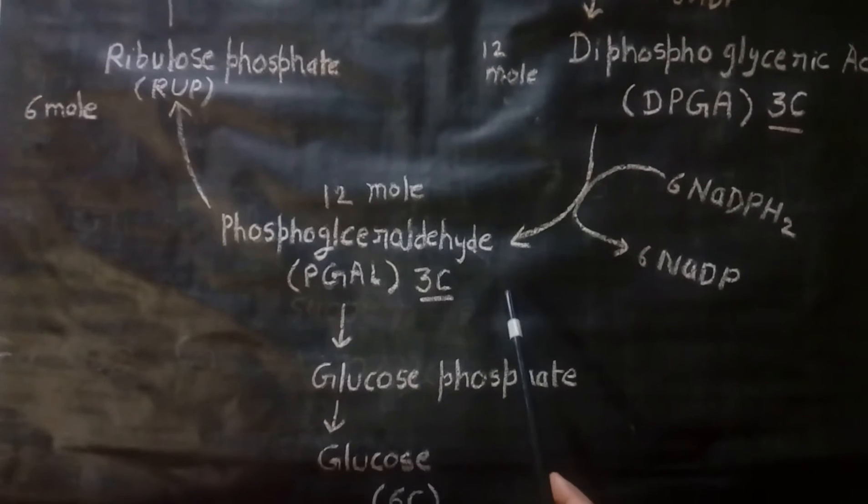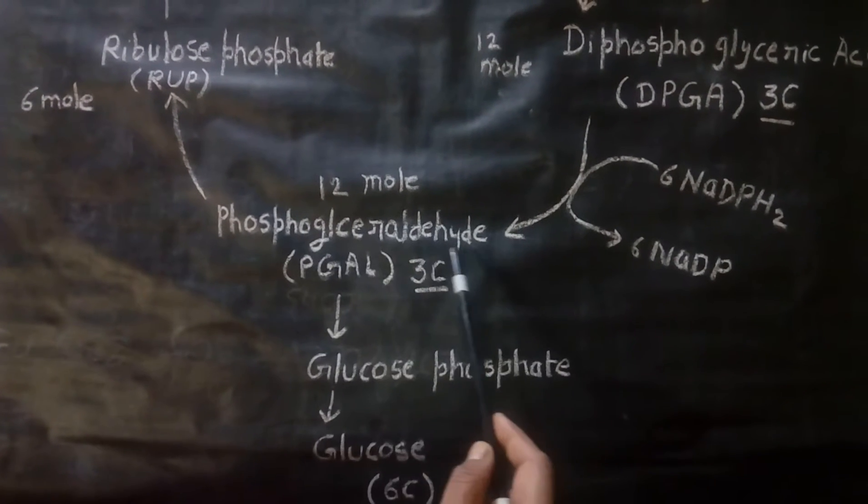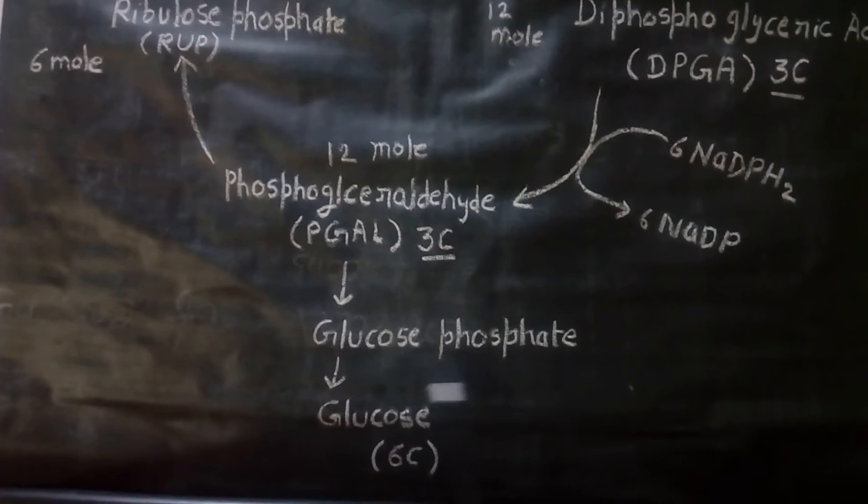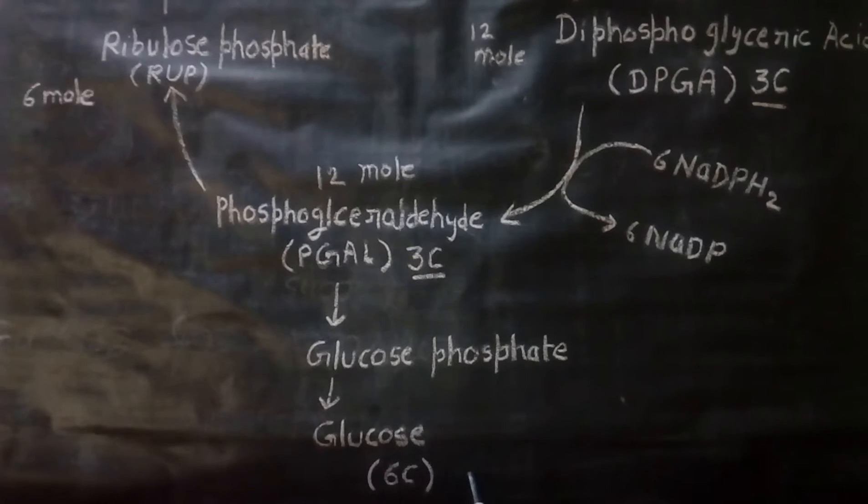It is a 3-carbon compound. Now some molecules of phosphoglyceraldehyde convert to glucose phosphate, and this converts to glucose, which is a 6-carbon compound.